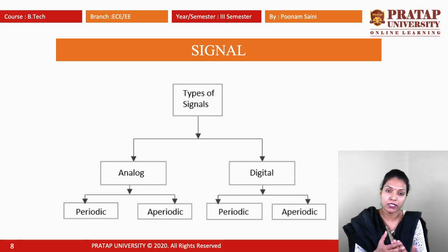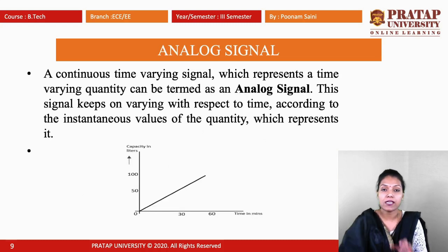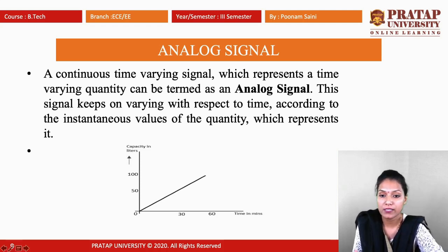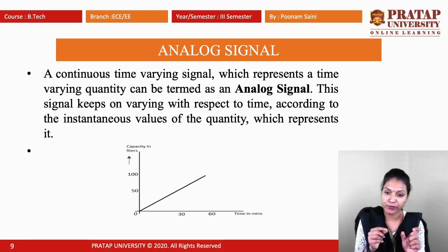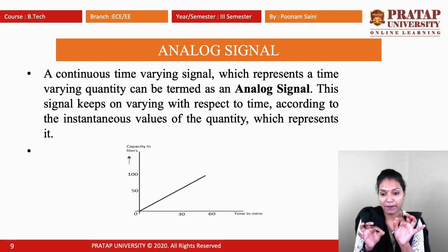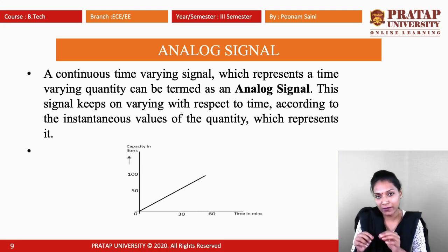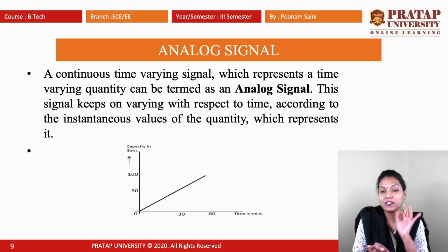In analog, there are two subtypes: periodic and aperiodic. In digital, there are also periodic and aperiodic. An analog signal is a continuous time-varying signal which represents a time-varying quantity. This signal keeps on varying with respect to time — at zero position the amplitude is zero, at 30 it changes, at 60 it changes again. Analog means the variation is continuous with respect to time, and the signal keeps on changing at every position.